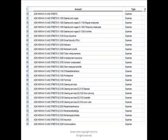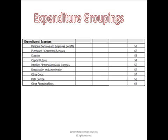If you're unsure what accounts go where and how it all works, the uniform chart of accounts has a detailed description for every category and every line item inside the chart.